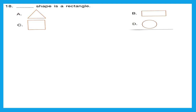Question 18: 'Dash shape is a rectangle.' A rectangle has 4 sides and 4 corners, but unlike a square, a rectangle has only 2 pairs of equal sides — not all 4 equal. A square has all 4 sides equal. So the shape that is a rectangle is option B.